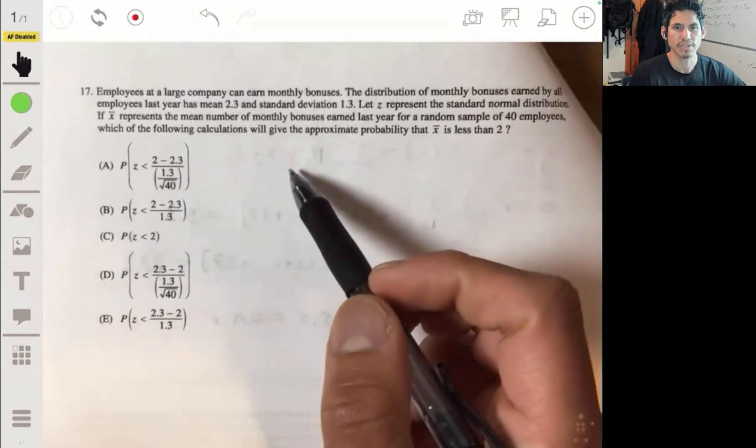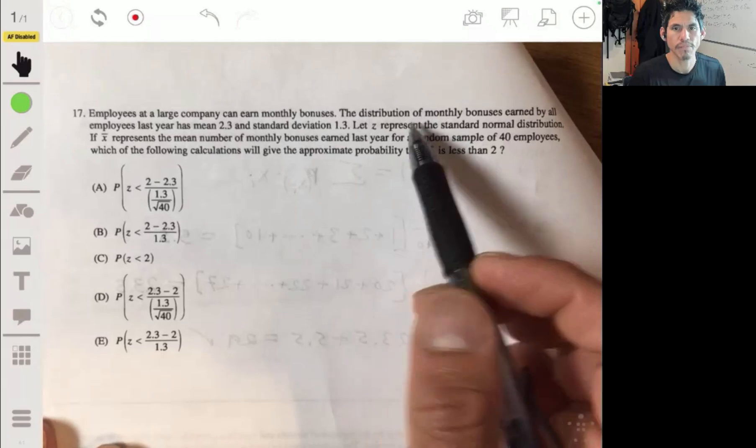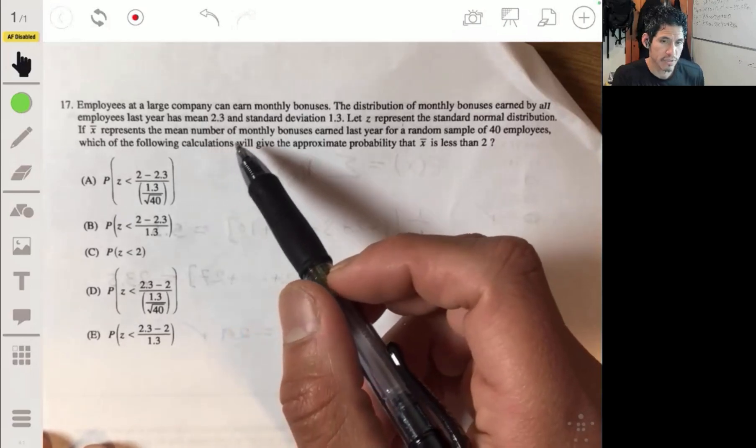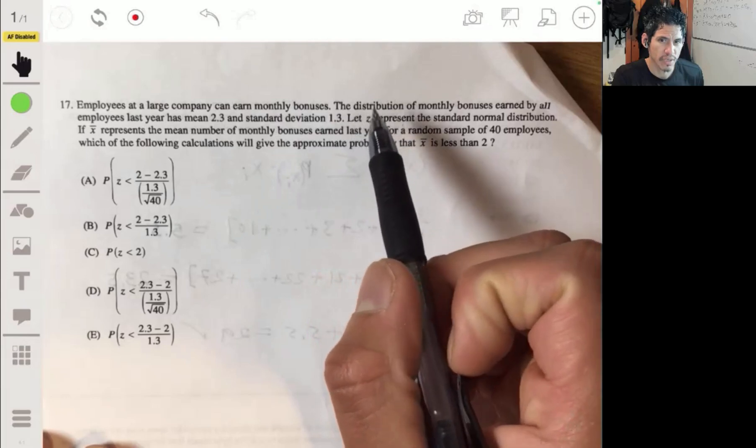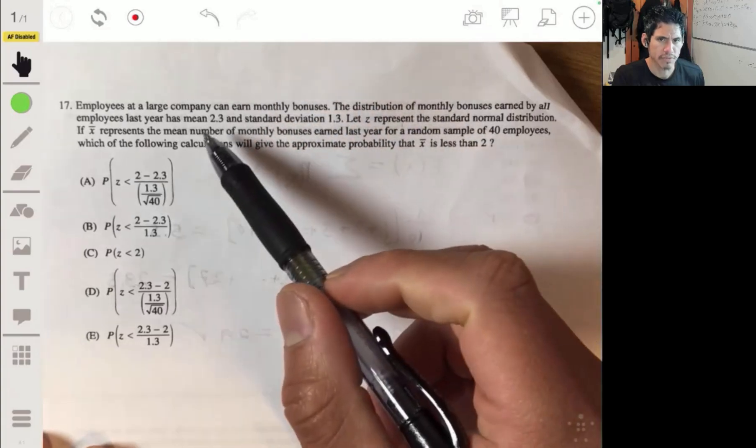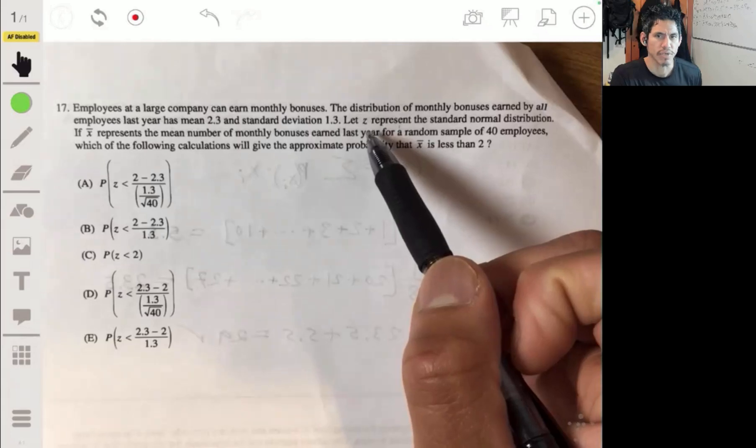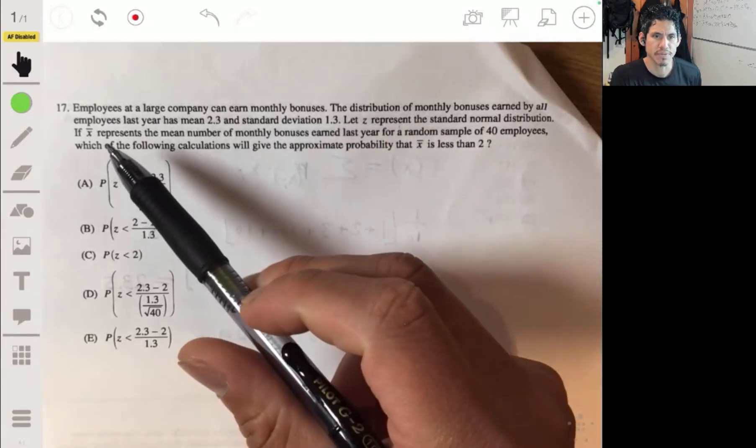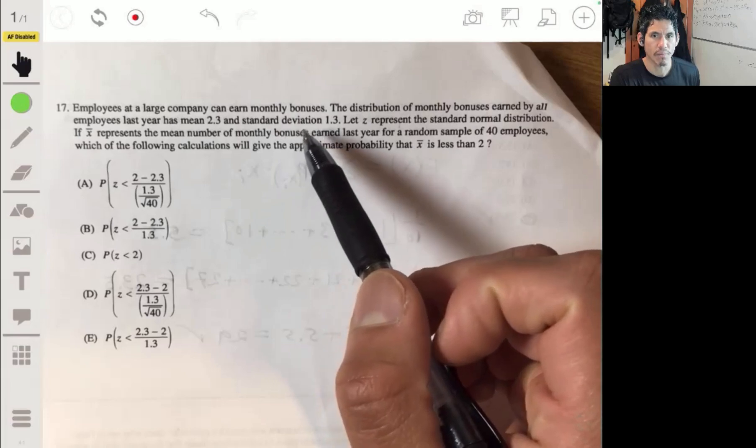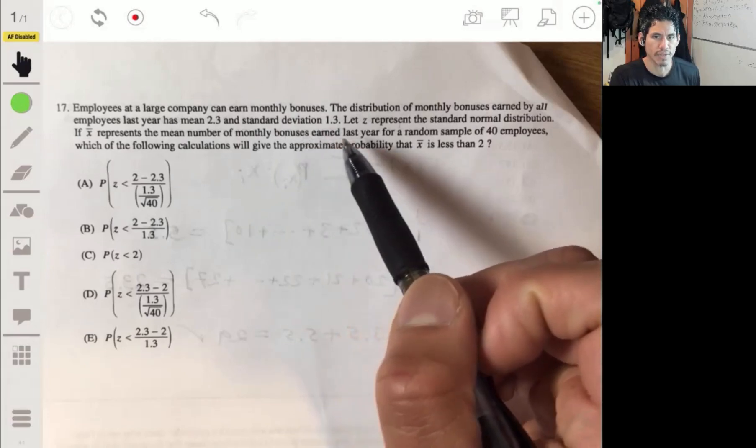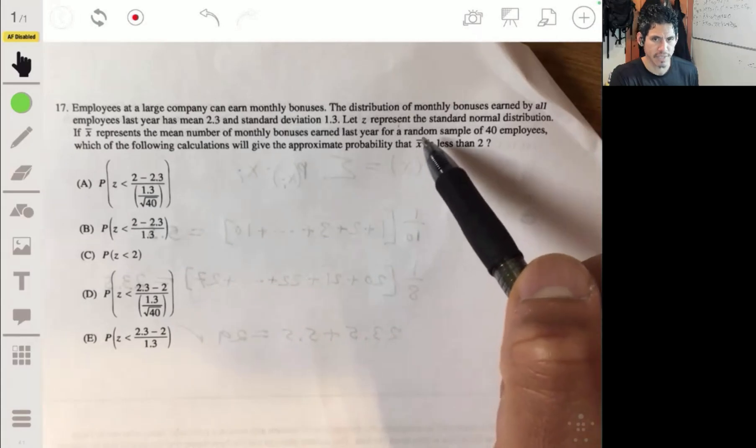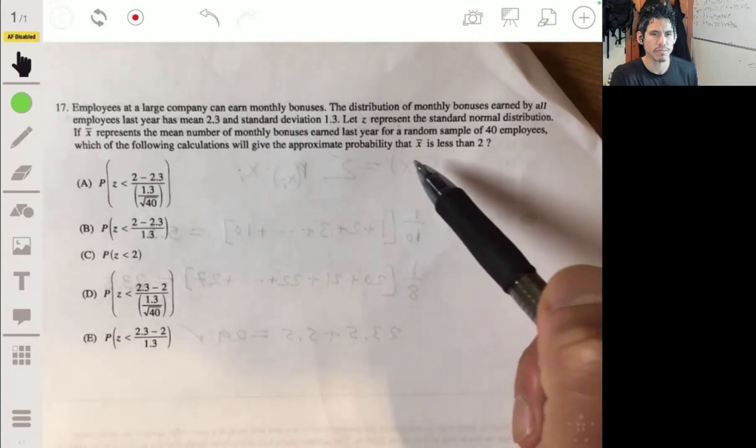Okay, problem 17. Employees at a large company can earn monthly bonuses. The distribution of monthly bonuses earned by all employees last year has mean 2.3 and standard deviation 1.3 in thousands of dollars. If X-bar represents the mean number of monthly bonuses earned last year for a random sample of 40 employees, which of the following calculations will give the approximate probability that X-bar is less than 2?